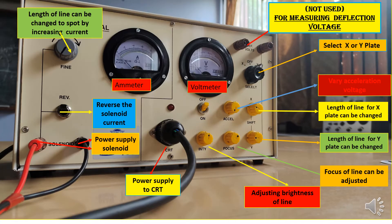This is the apparatus we will be using for measuring the e by m ratio. Different knobs are present with different functions. The first knob is used to measure or change the length of the line on the CRO — we have to change the line to a spot. We change the current using these knobs. The other two knobs are not used; they are for measuring deflection voltage.